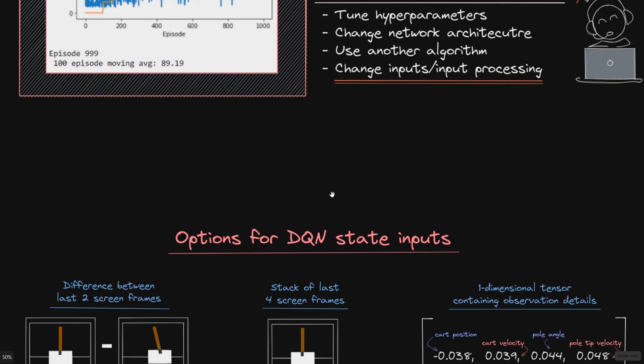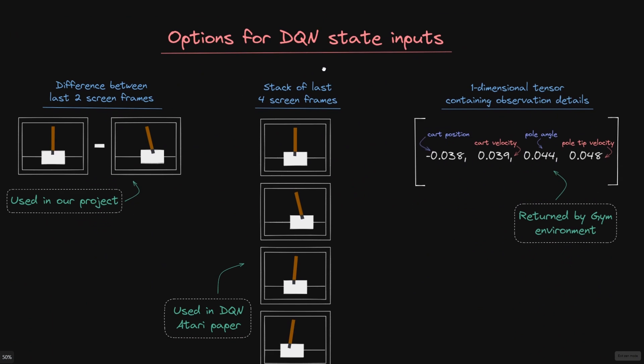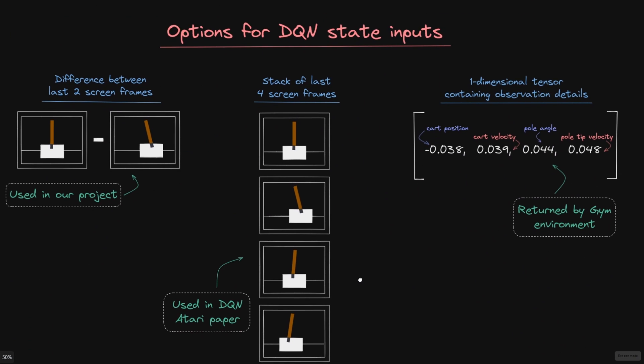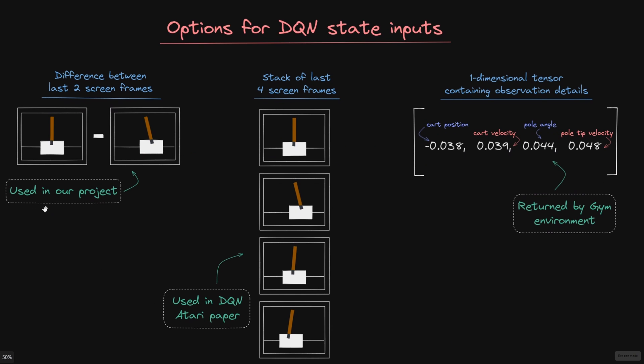In fact, in this particular environment, we have multiple options for how we may choose to determine the state of the environment, which I've illustrated a couple of them here. In our project, for example, we chose to work with the difference of the last two rendered screen frames and then pass this difference of pixel data as input to the network.